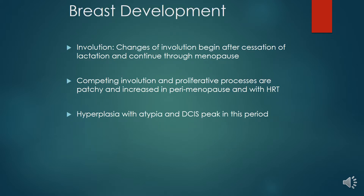Involution — the changes of involution of the benign breast occur after the cessation of lactation and continue to menopause. Proliferative and involutional processes are patchy and increase during the perimenopause and with HRT. Hyperplasia with atypia and DCIS is seen in this period.